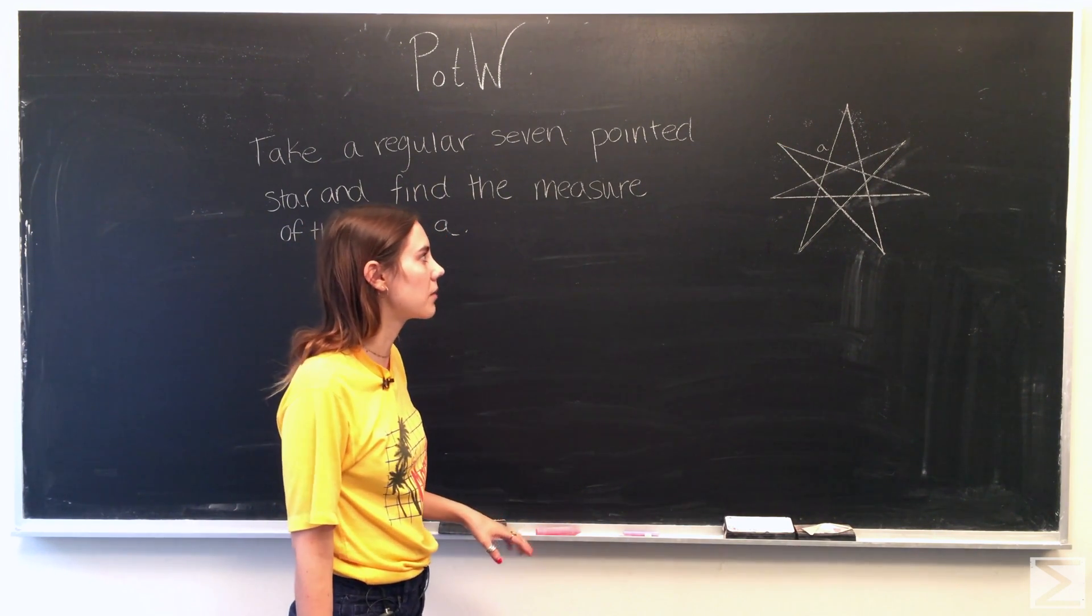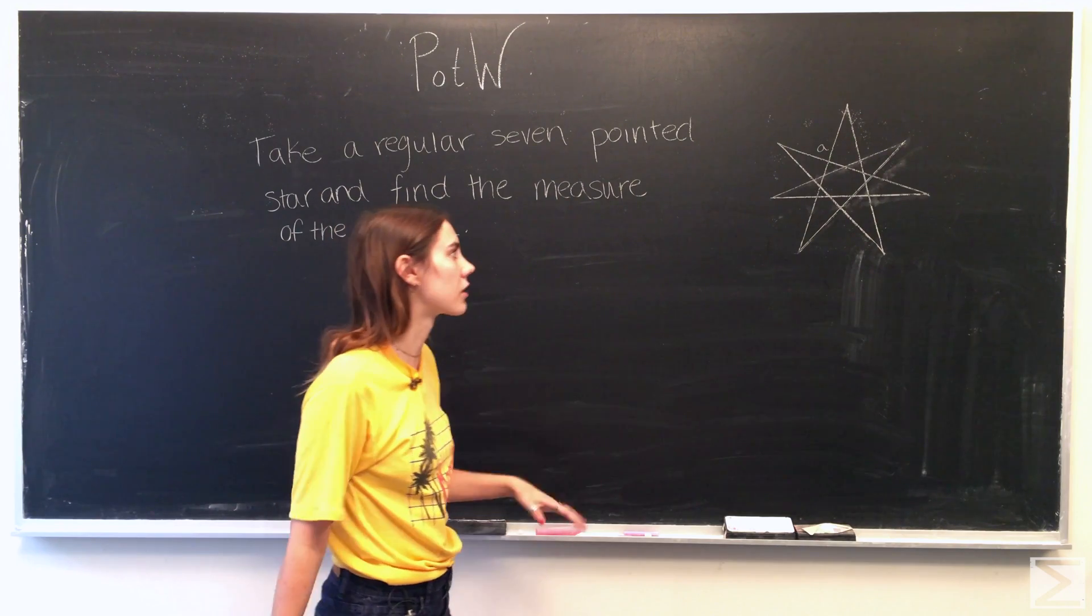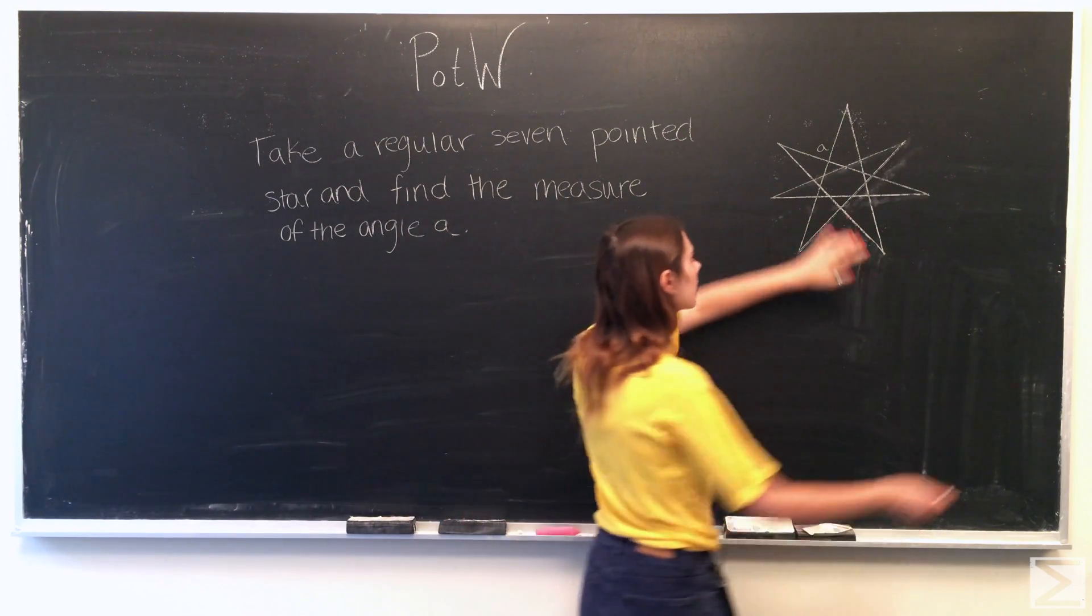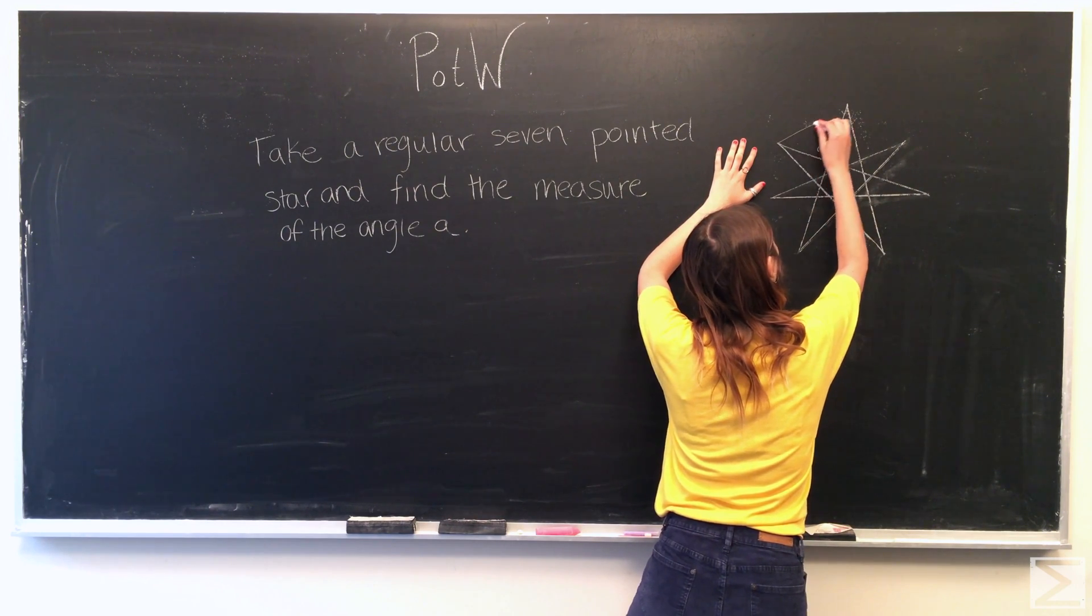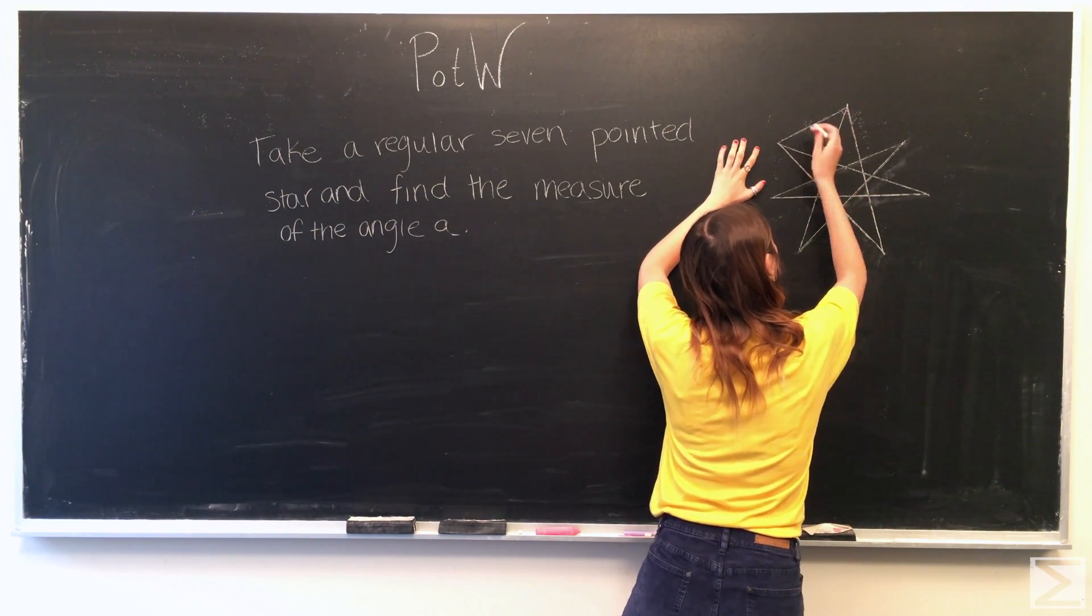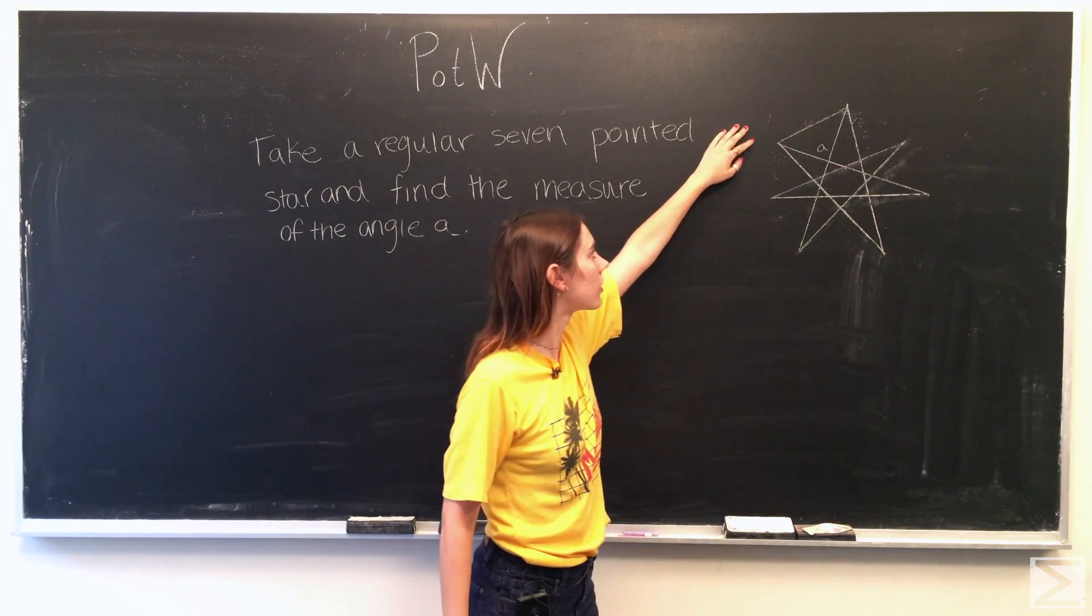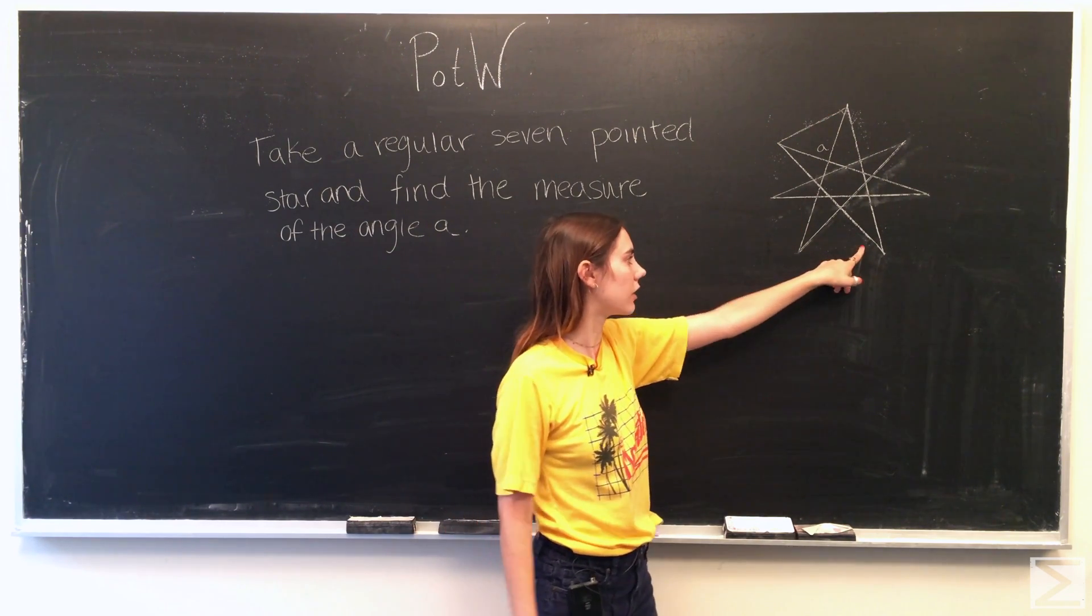So to begin, if you think about the star as inscribed in a circle, it'd be a perfect circle all the way around. And imagining that this major triangle right here as part of the circle, we can find this angle here. Let's call it B.